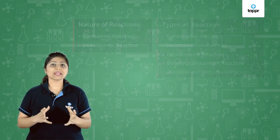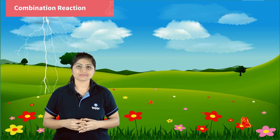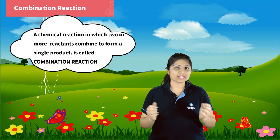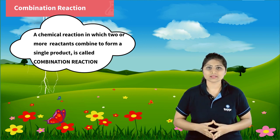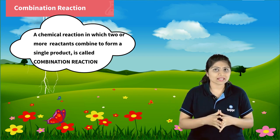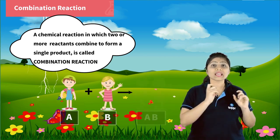Let us begin with combination reactions. The name itself tells us that it is about combining. In a chemical reaction, when two or more reactants combine and form a single product, it is called a combination reaction. It can be represented as A + B → AB.